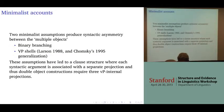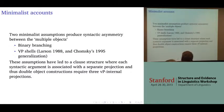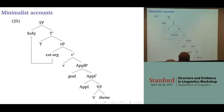There are two assumptions that produce a syntactic asymmetry between multiple objects. One has to do with binary branching, and the other is the VP shell proposed in Larson 1988. These two assumptions eventually led to a clause structure where each syntactic argument is associated with a separate projection, and thus double object constructions require three VP-internal projections.